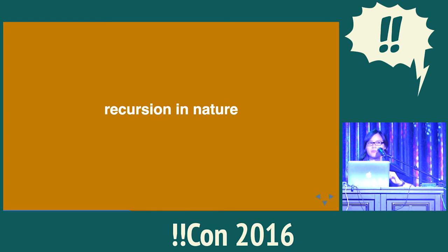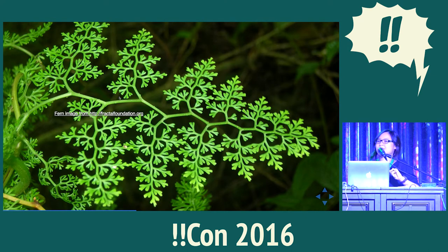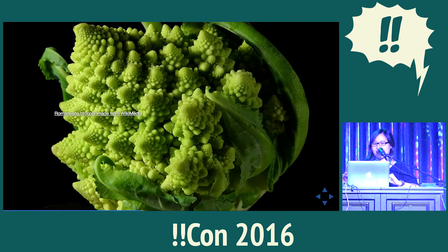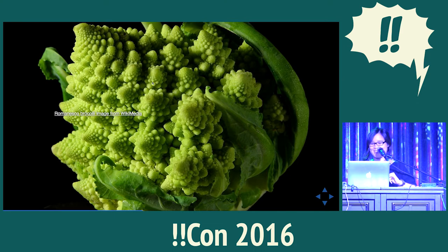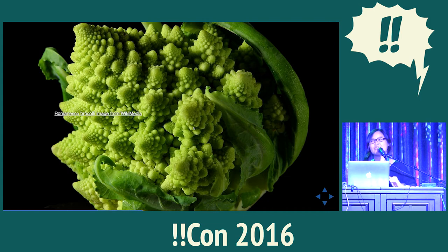Recursion also happens in nature. Most of us think of it in a very mathematical sense, but there are really cool fractals that appear. For example, ferns — one of my favourite fractal plants — where each branch of a fern leaf looks like a tiny little fern leaf, and every little branch in that tiny fern leaf looks like a tiny fern leaf, and so on. We also have fractal broccoli, where each point on it looks like a tiny little broccoli. Trees are also recursive — each branch looks like a tiny little tree.